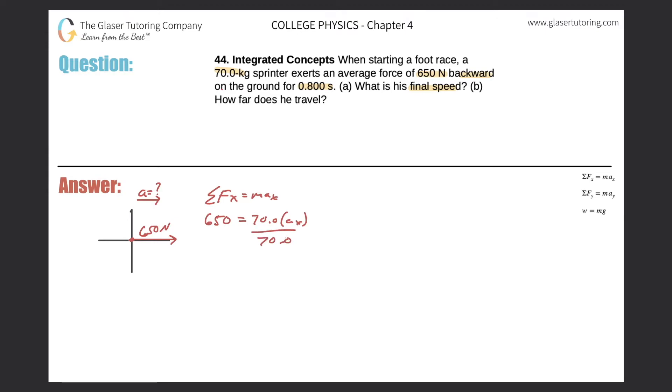Divide out the 70 from both sides. So the acceleration then in the x direction, and look, it is positive. That's what we expected it to be, given how I framed the problem. It's 9.29 meters per second squared. That's the acceleration.